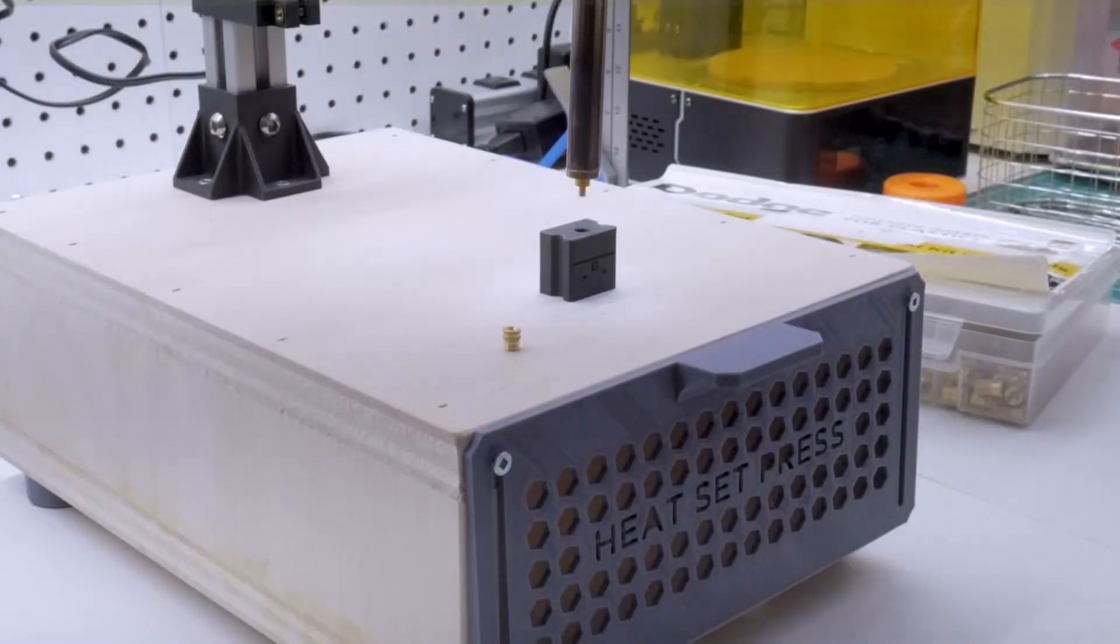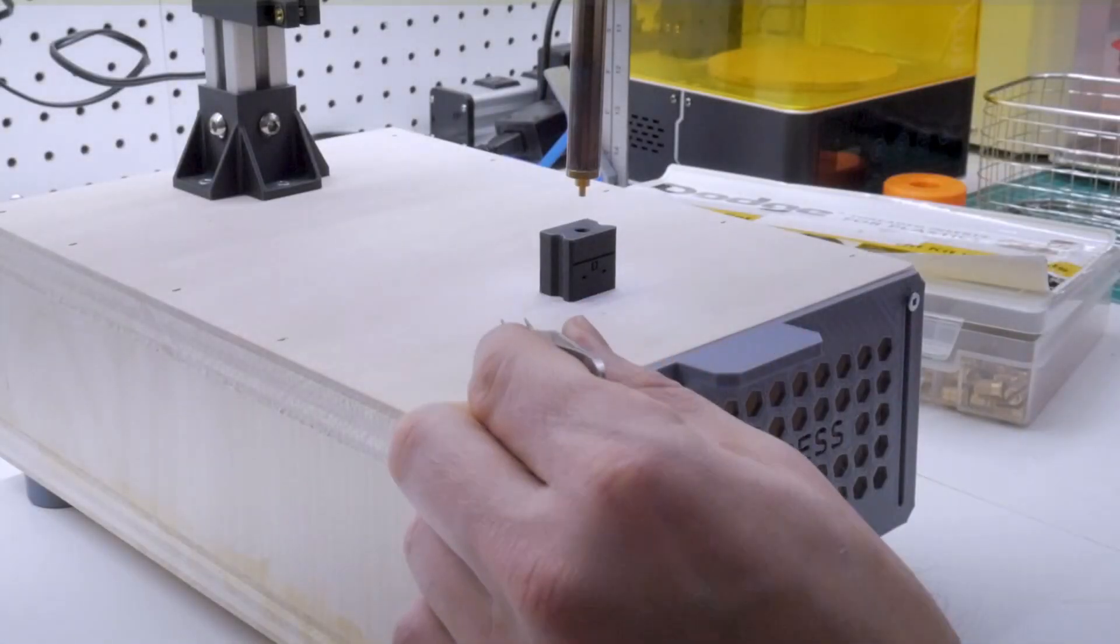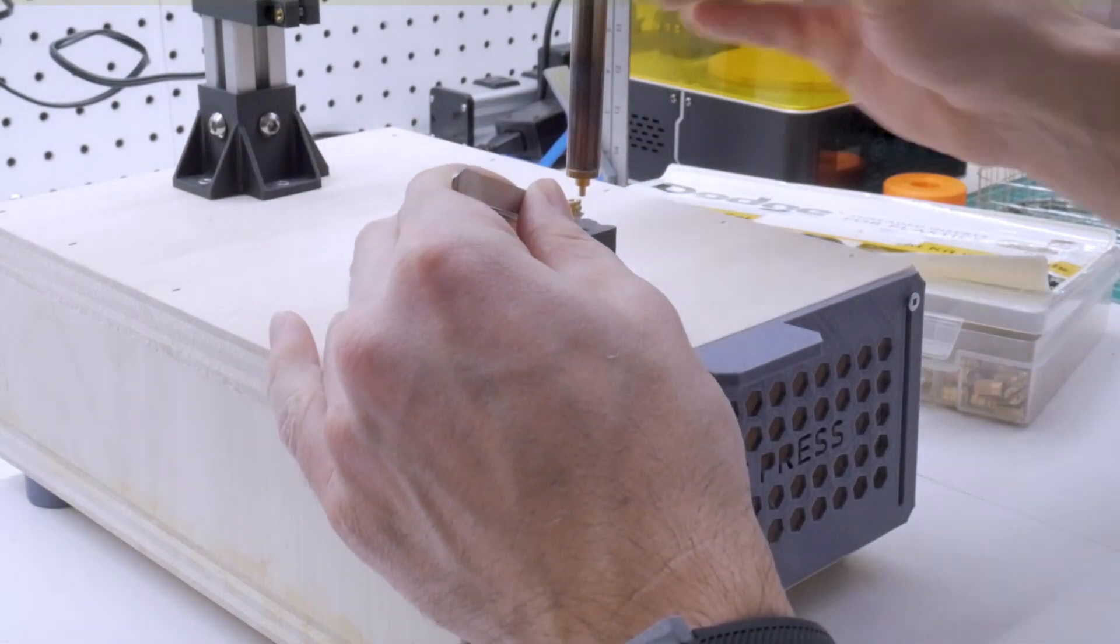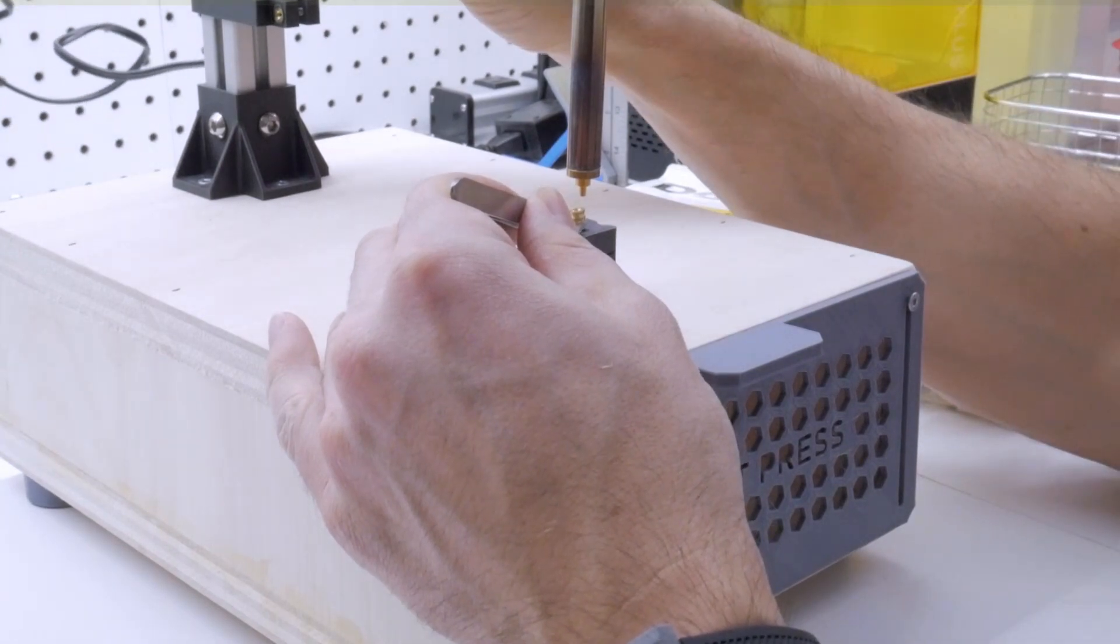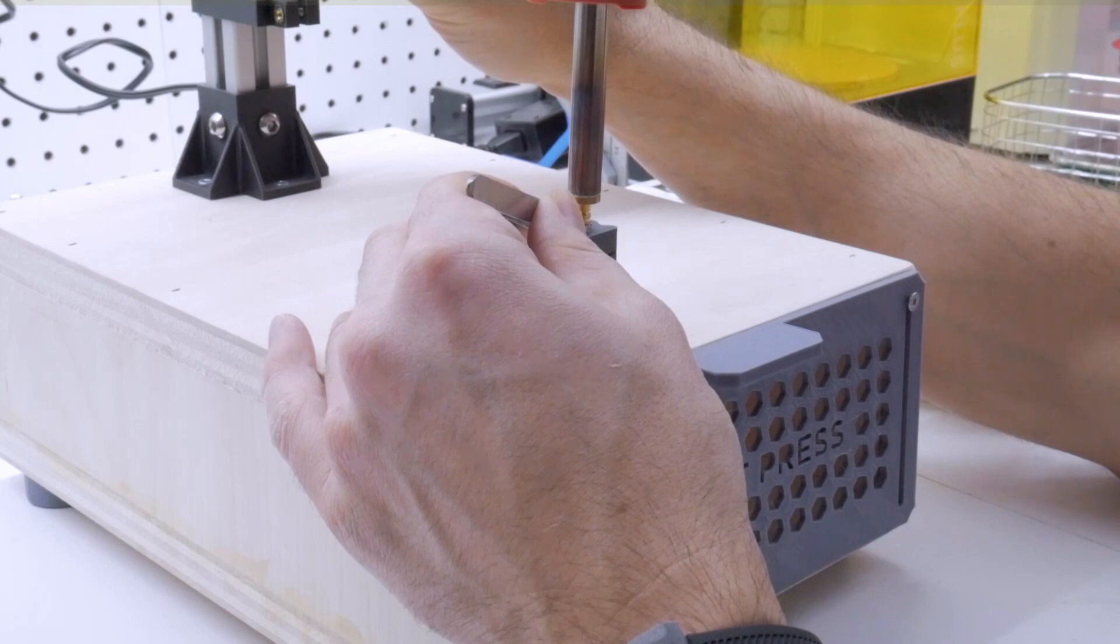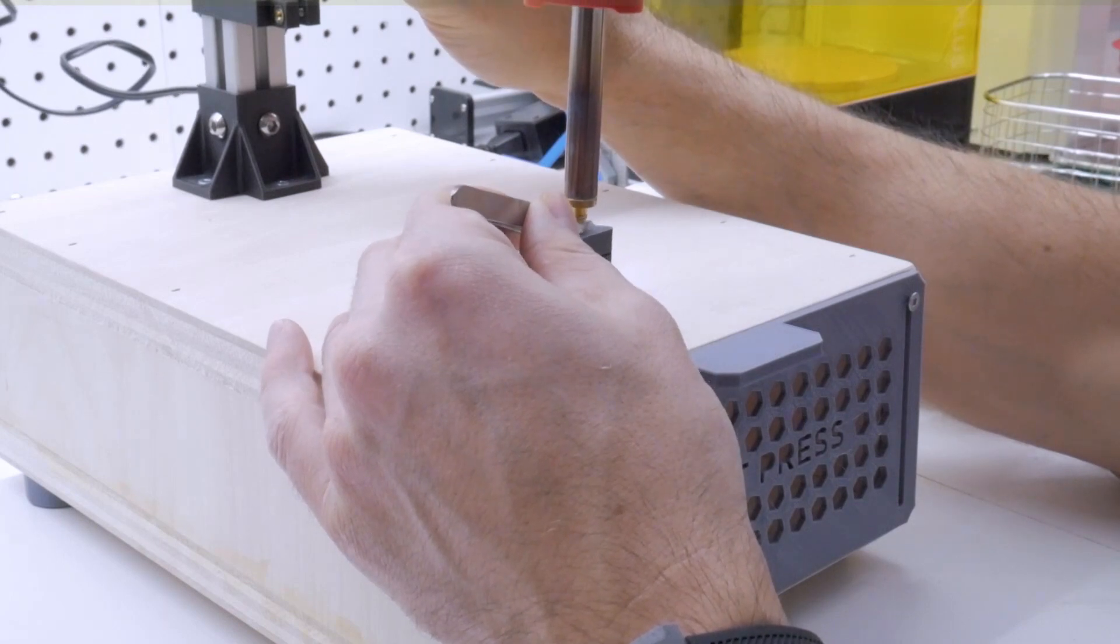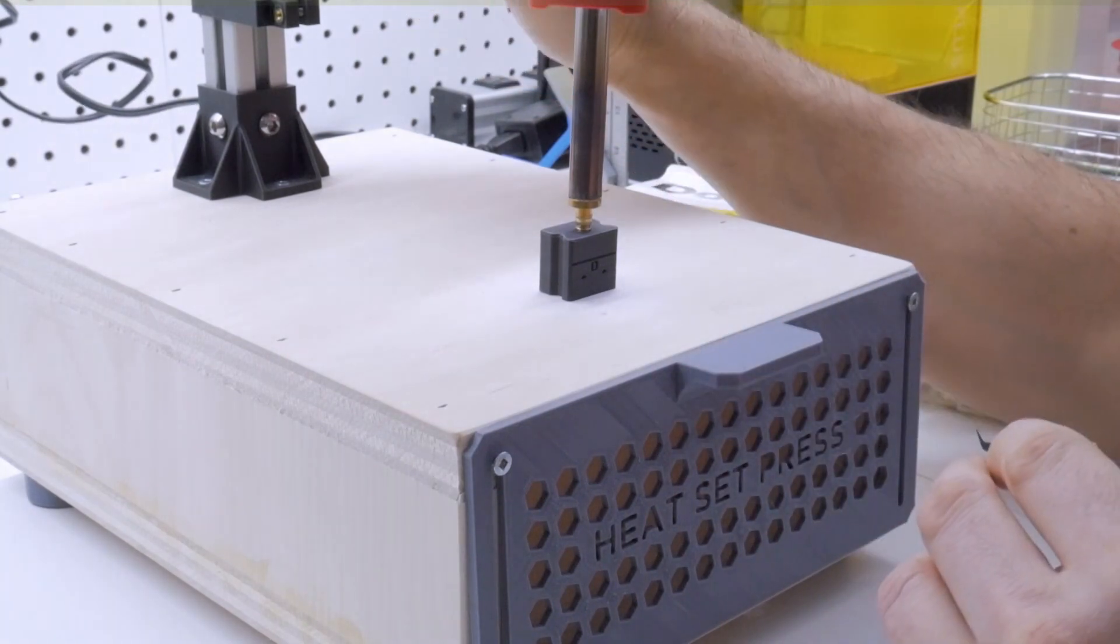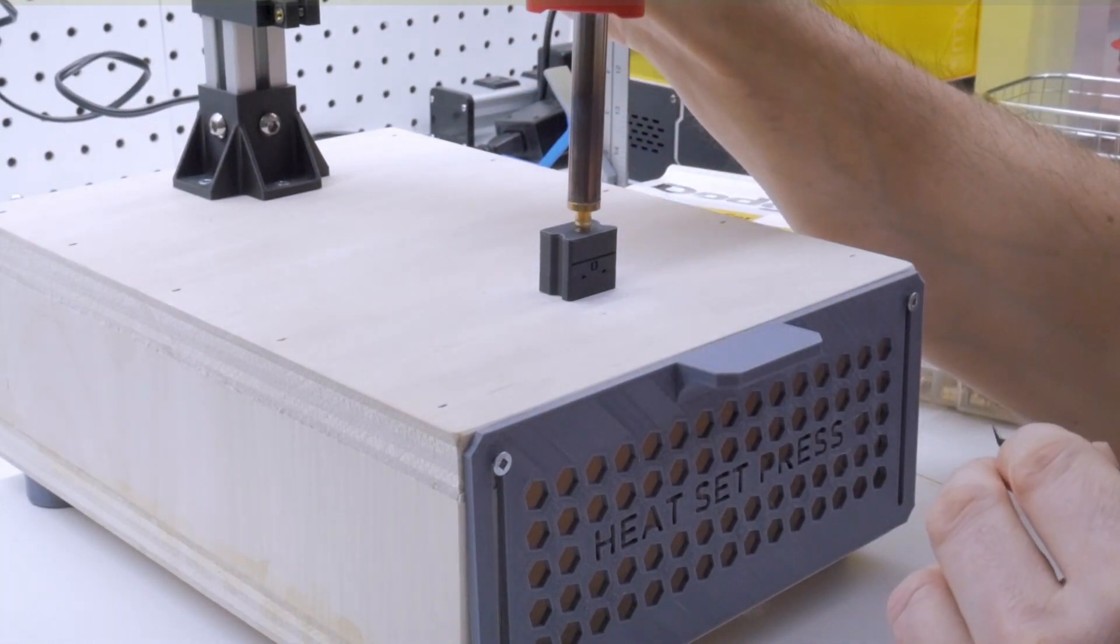The first step in the assembly is to press in one of these brass threaded inserts. This is a metric M3 insert since we're going to be using an M3 socket head cap screw in the adjustment knob. I've built myself a custom heat set press specifically for pressing these kinds of inserts into 3D printed parts, and you can see how I did that by following the link in the top right corner.